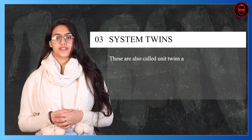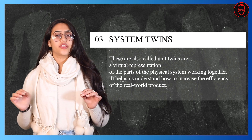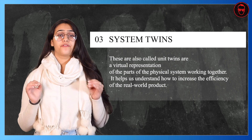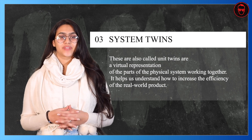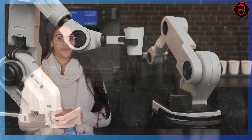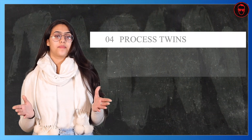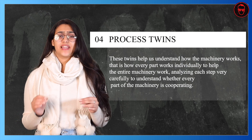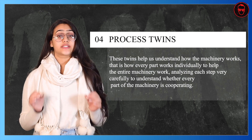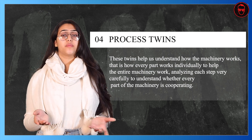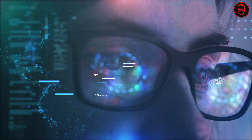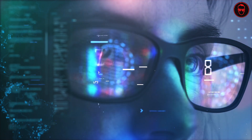Third, we have system twins, also called unit twins. These are virtual representations of the parts of the physical system working together. They help us understand how to increase the efficiency of the real-world product. Our fourth type is process twins. These twins help us understand how the machinery works — that is how every part works individually to help the entire machinery work — analysing each step very carefully to understand whether every part of the machinery is cooperating.